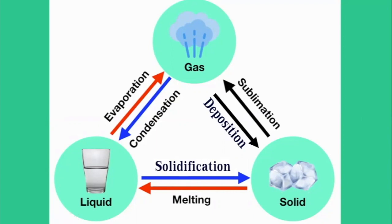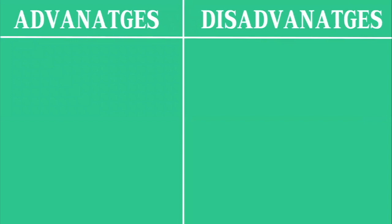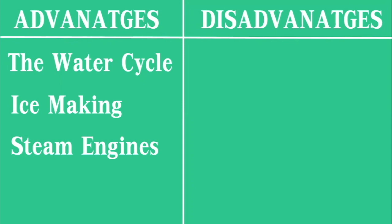This is all about physical changes. We also discovered the effects of change of state of matter — there are some benefits and some negative sides, advantages and disadvantages. The big benefit is the water cycle, which is important to all living things and happens because of changes of state. We also use physical changes to make ice, and we use water in everyday life in steam engines, ice making, and ice cream making.